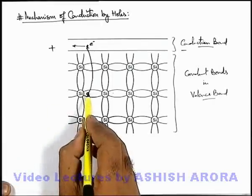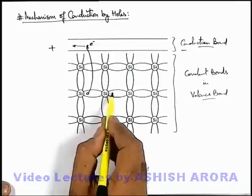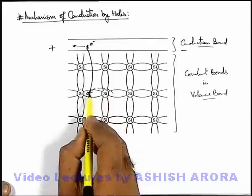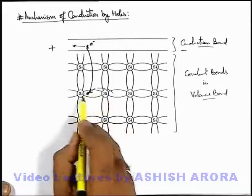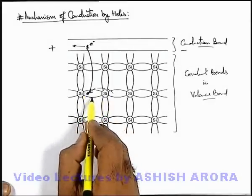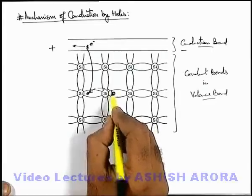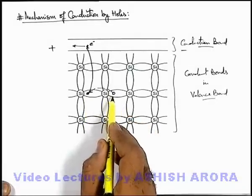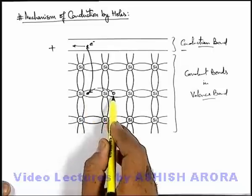So as being a vacant space, this can pull an electron from the neighboring covalent bond and it will reform the covalent bond again. And a hole is created due to breaking of another covalent bond in the neighboring zone, and it requires almost negligible amount of energy.